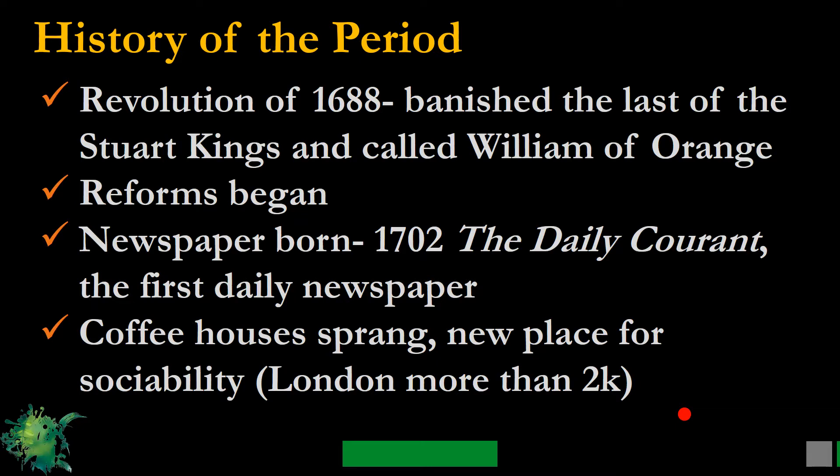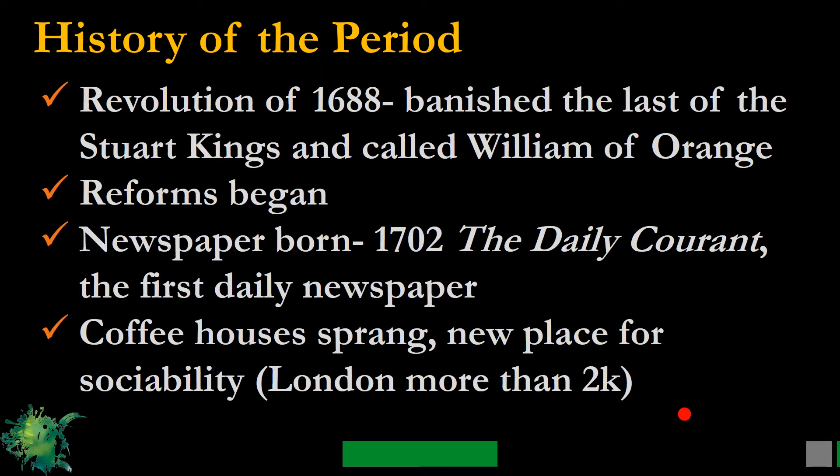The 18th century is particularly important for reforms in the social and political life of England. We discussed the two parties — Whigs and Tories — and how they formed their opinions and thought movements. Social reformation in 18th century England reached a peak, and we also find that newspapers were born in this same period.